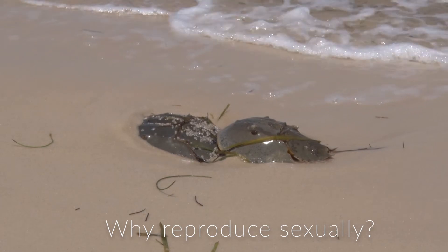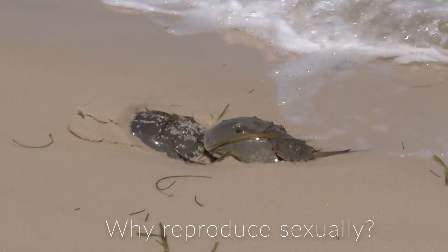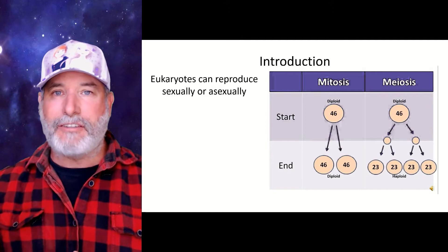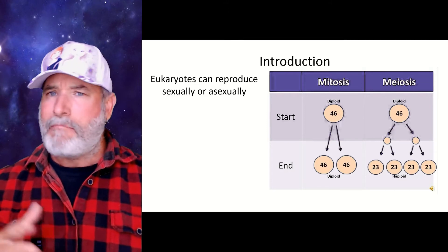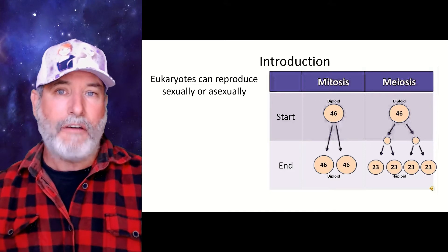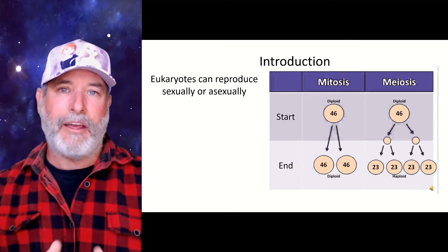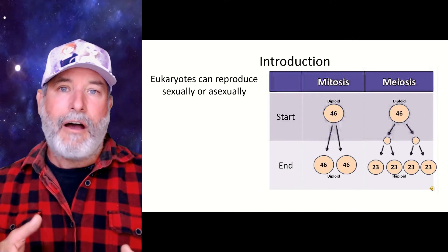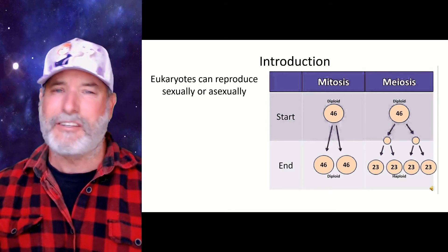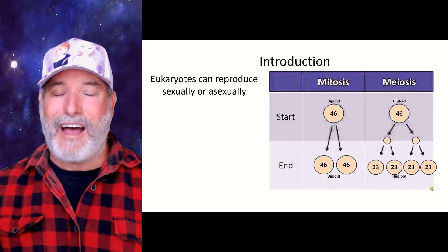Eukaryotes are the only type of cells that can reproduce sexually, and in fact they can reproduce both asexually and sexually. We have two different types of cell division: mitosis and meiosis. Mitosis is the asexual form of reproduction where you produce daughter cells that are the exact same as the parents. Whereas in meiosis, you form four daughter cells that are genetically different, and those daughter cells form the gametes that go on to fuse to form a new organism — that's sexual reproduction.